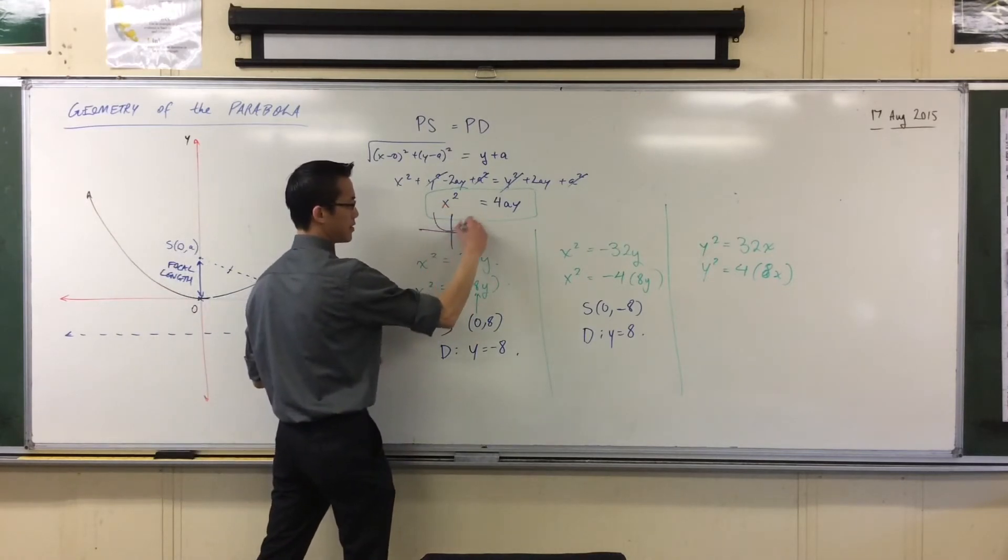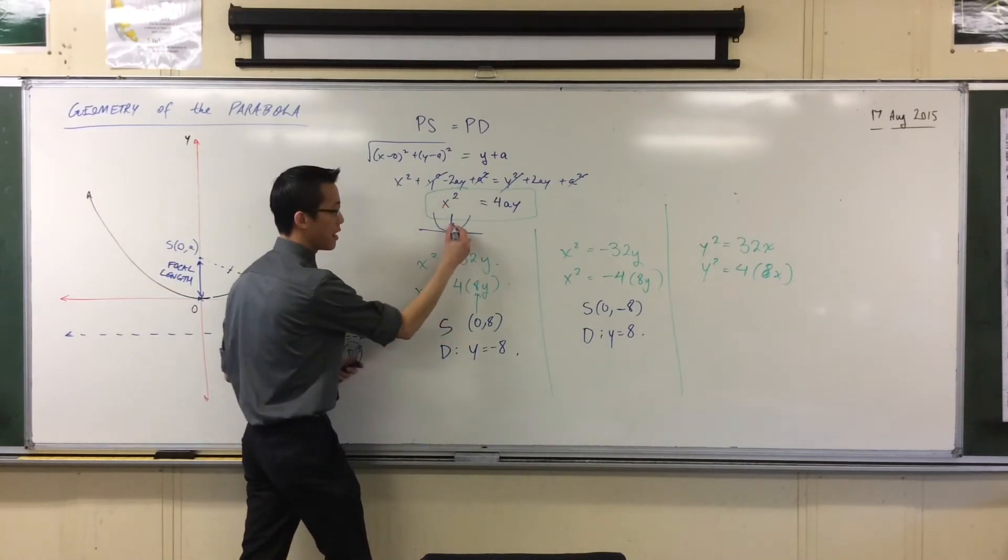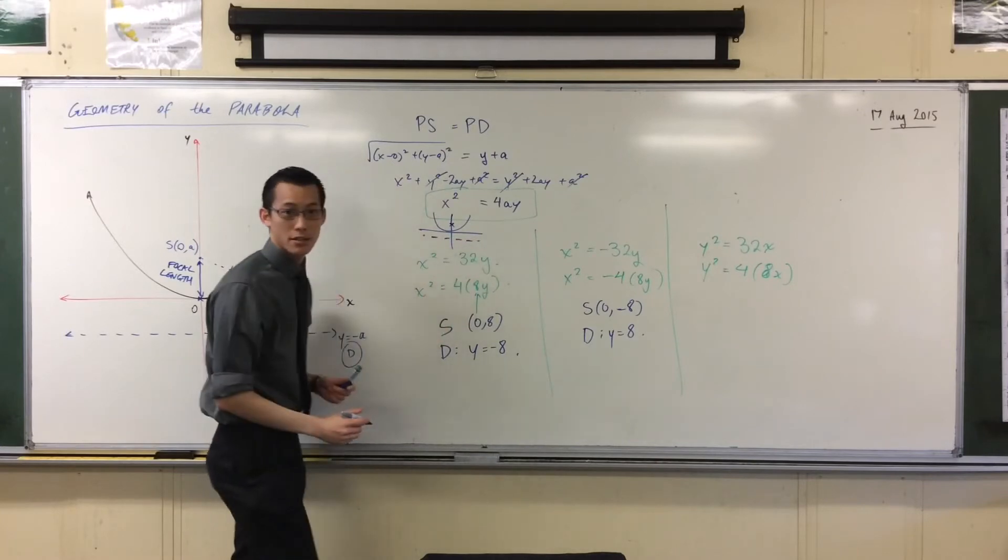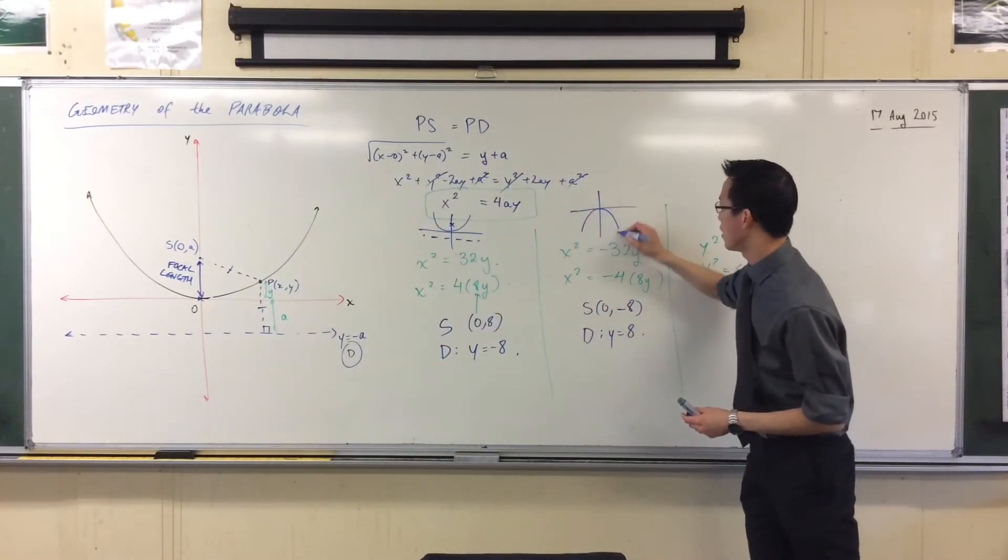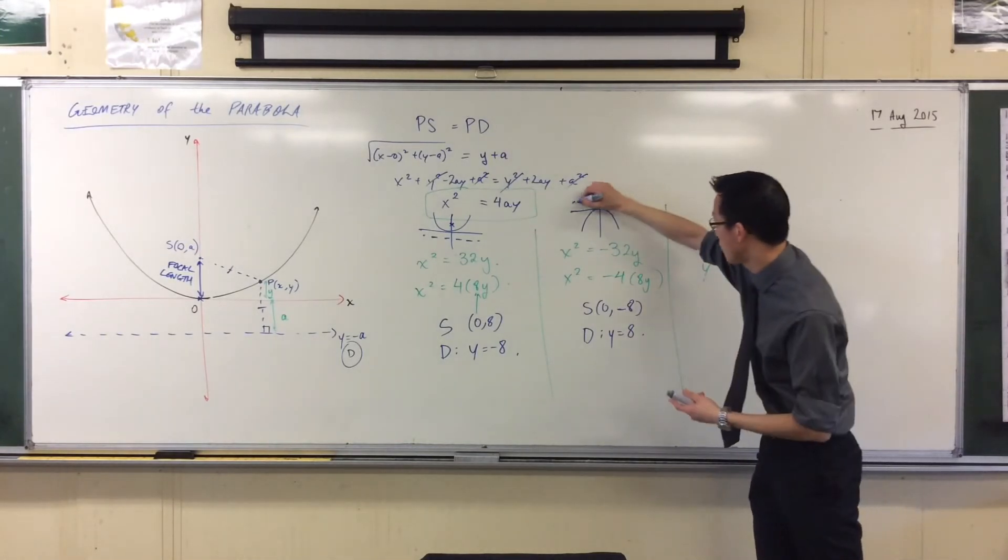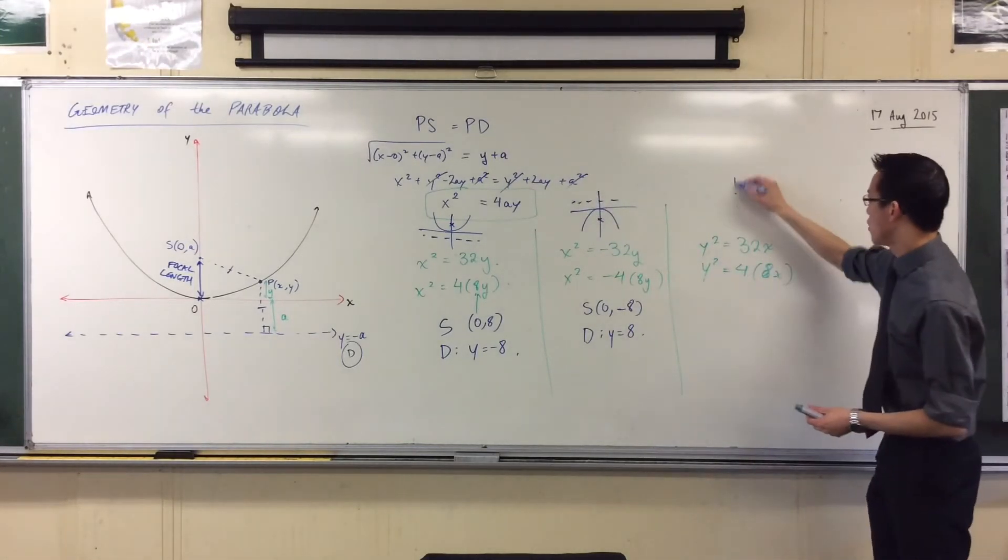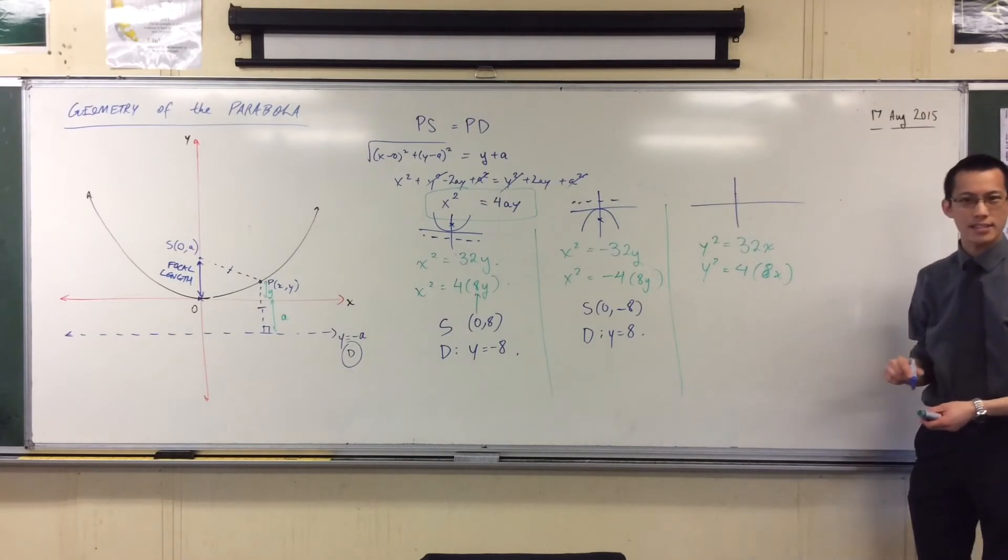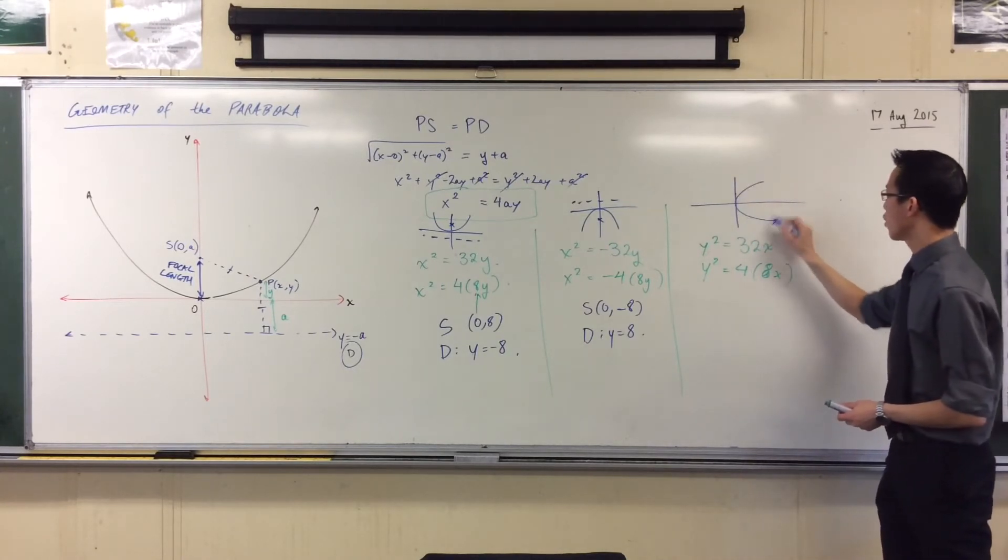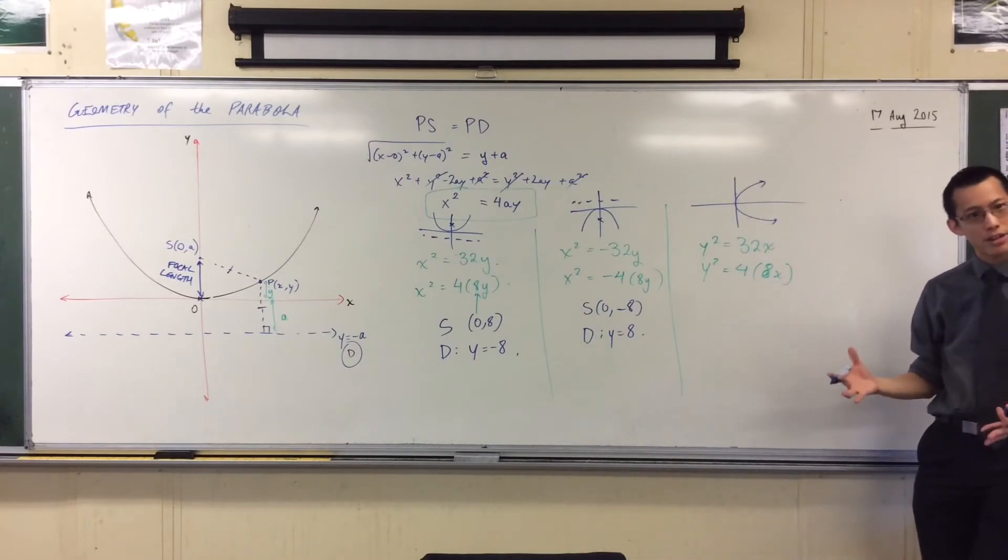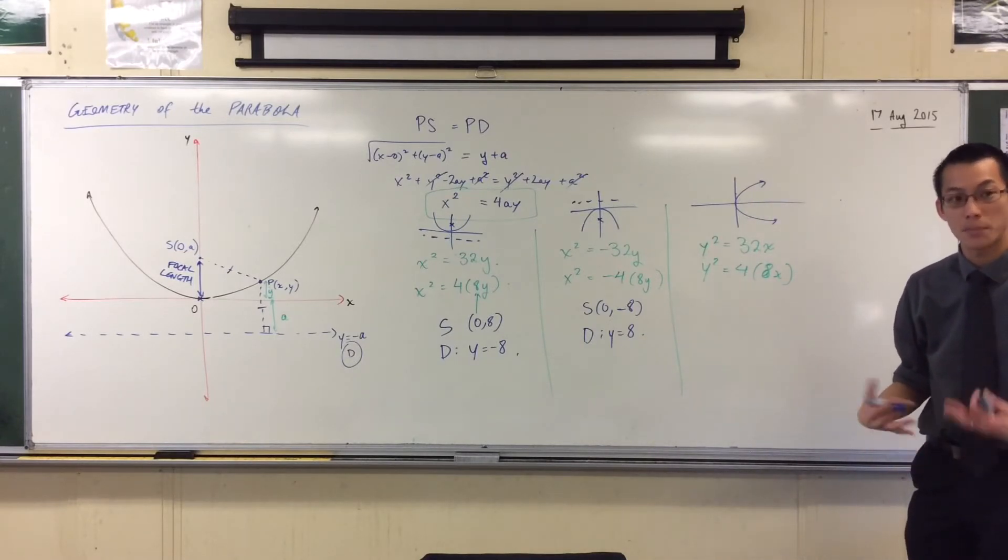This guy is facing up, so there's the focus, and there's the directrix, right? Have a look at this next one. This guy's facing down, so the directrix is up above, and the focus is below. So now, which way is this parabola going? It's going off to the right, isn't it? So you can already see where the directrix and the focus should be. Where would you expect them to be?